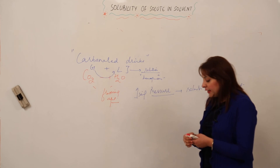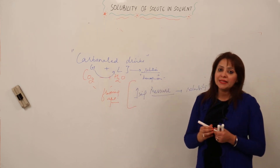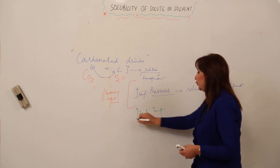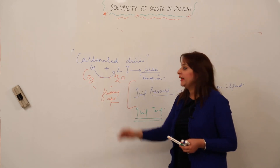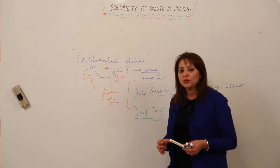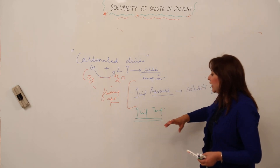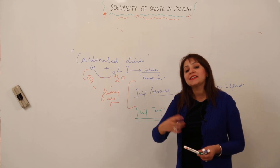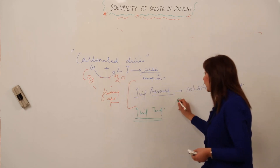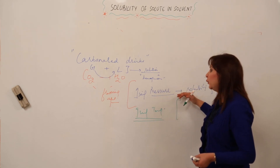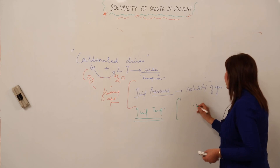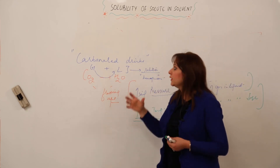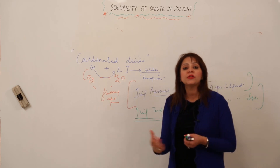This is also stated by Henry's Law in higher classes, which states that the mass of gas dissolved at a given temperature in a given liquid depends upon the pressure — more the pressure, more mass of gas dissolves in the liquid. Now, if I increase the temperature, the gas molecules gain energy and move faster, so they escape and the solubility of gas in liquid decreases. So: increasing pressure increases the solubility of gas in liquid, but increasing temperature decreases the solubility of gas in liquid.